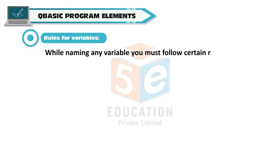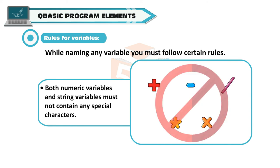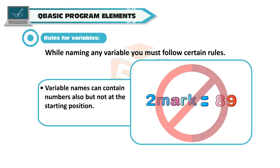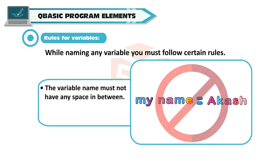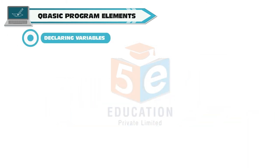QBasic Program Elements: Rules for Variables. While naming any variable, you must follow certain rules. It should start with an alphabet. Both numeric variables and string variables must not contain any special characters. Variable names can contain numbers also, but not at the starting position. The variable name must not have any space in between. The variable name must not contain any special character.